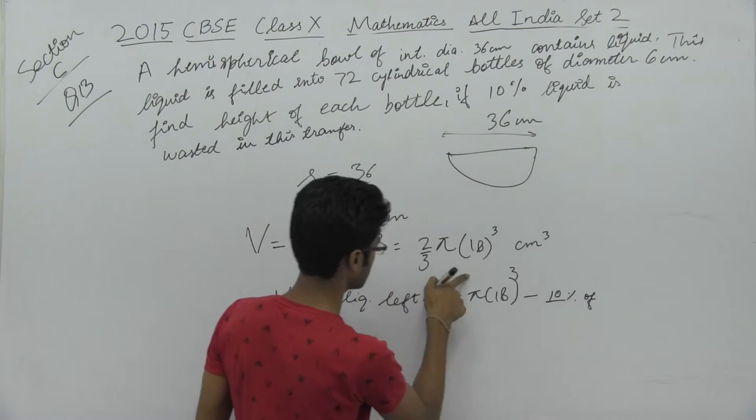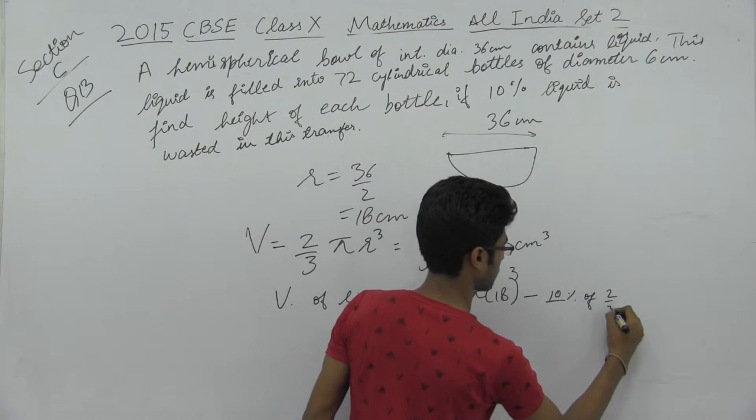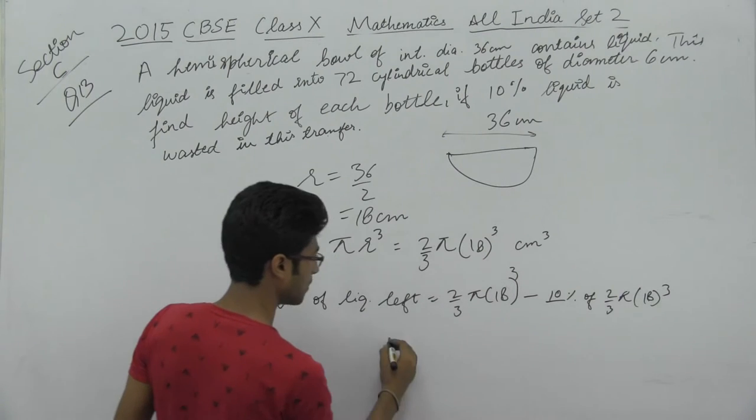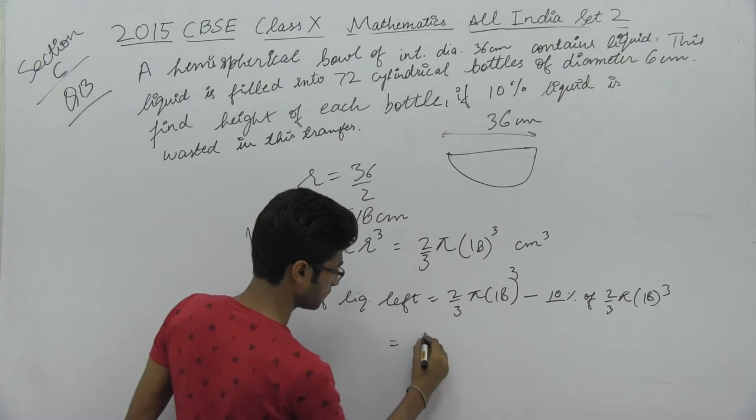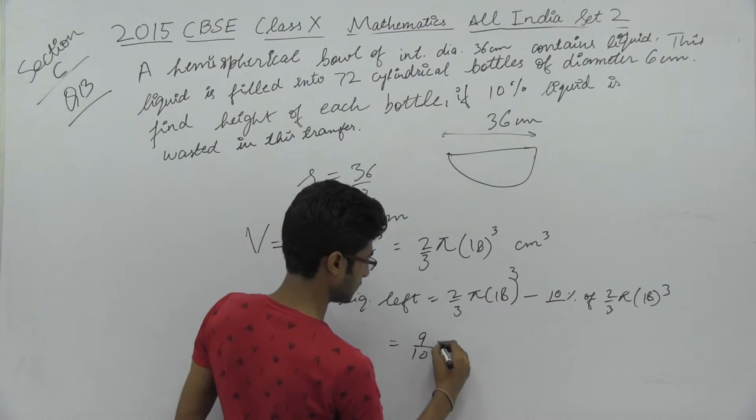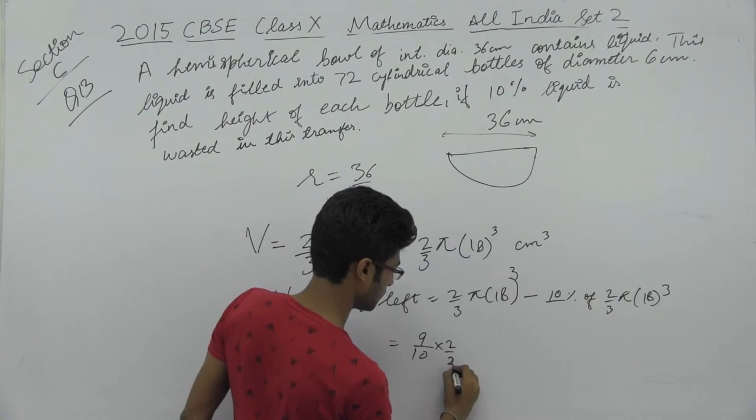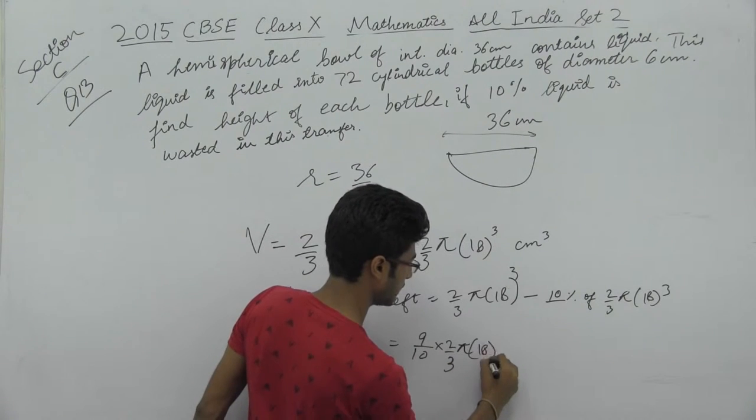So the remaining volume after wastage is 9/10 of the original, which equals (9/10) × (2/3) × π × (18)³.